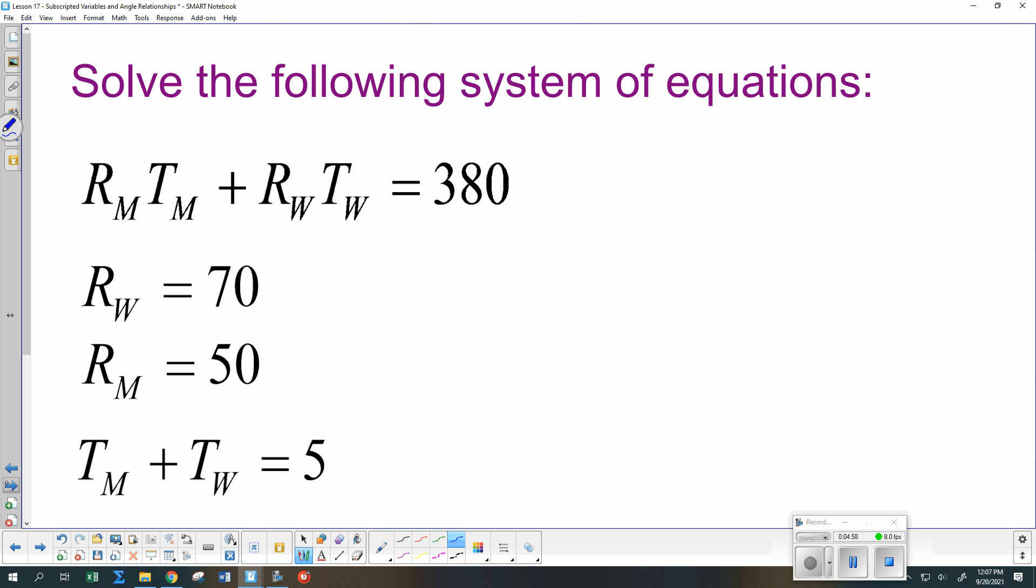Let's do another one of these. And I've actually got 4 variables in this thing. RW is one variable. RM is another variable. TW is another variable. TM is another variable. There are actually 4 things that I need to come up with numbers for. Except they're pretty nice to me to begin with. And they tell me what two of the numbers are. RW is really 70. And RM is really 50. So that means one of my equations is 50 TM plus 70 TW equals 380. Now I just have two variables. TM and TW.